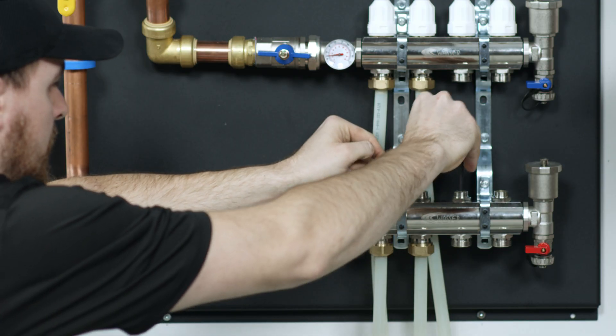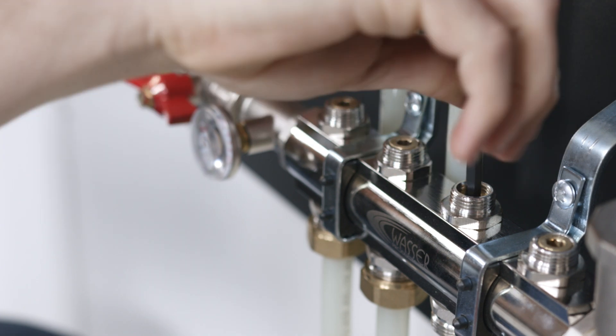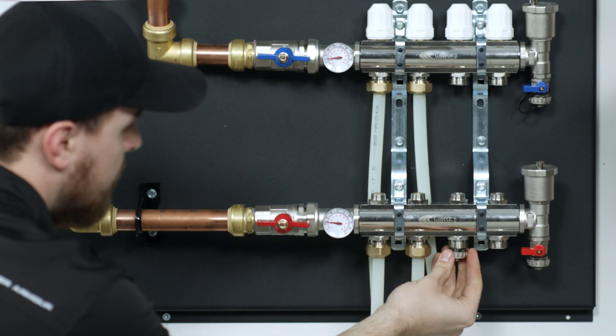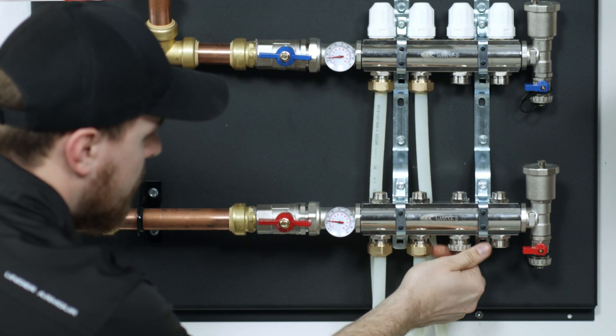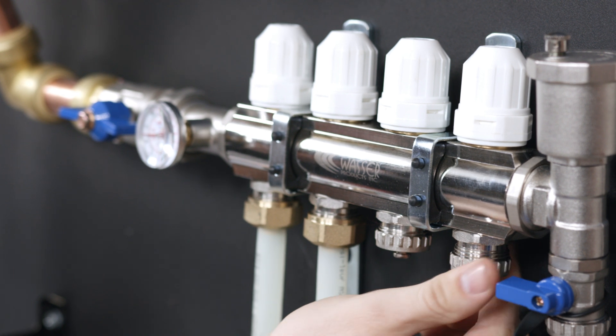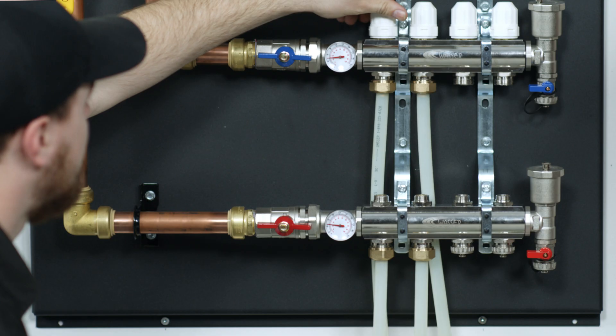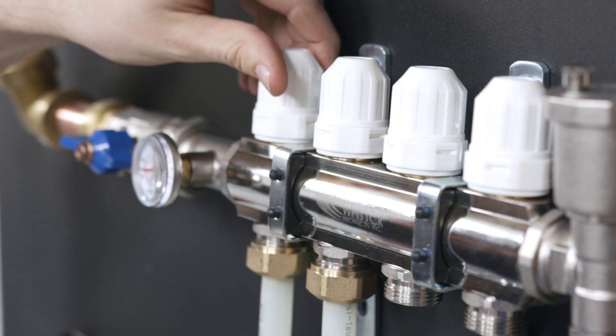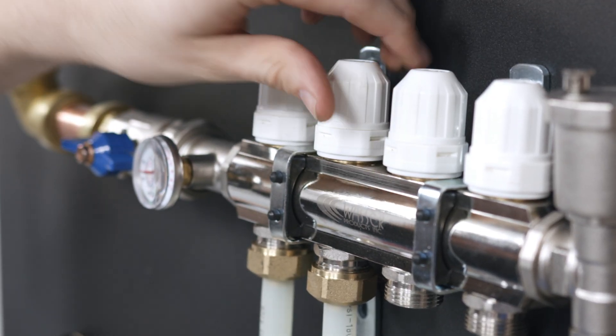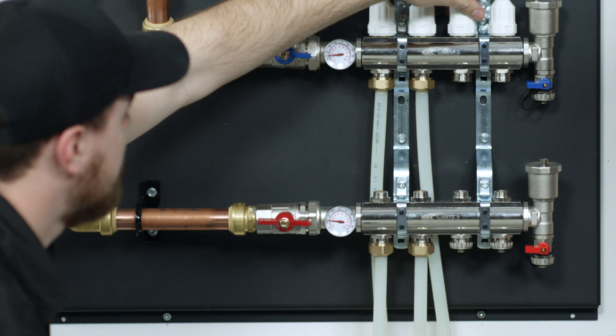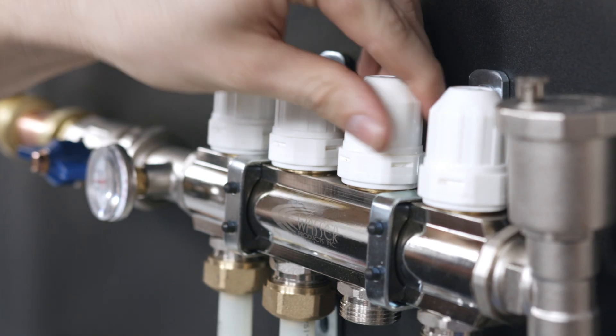With the Allen key, close any unused manifold ports. Open the manifold valves by turning the white caps counter-clockwise. Close any unused manifold valves by turning the white caps clockwise.